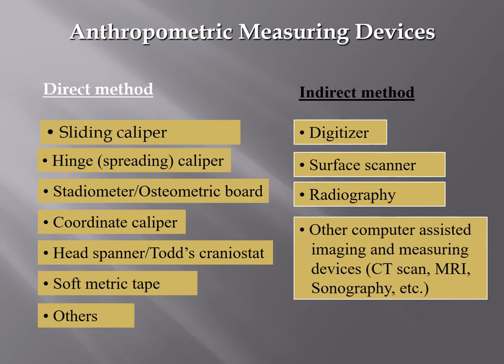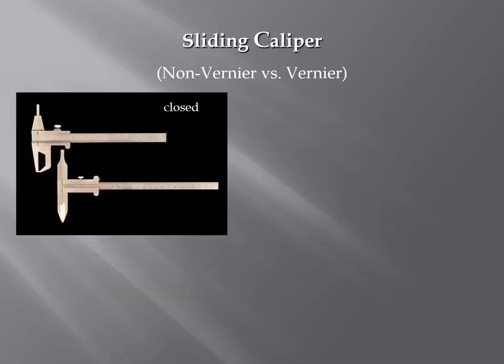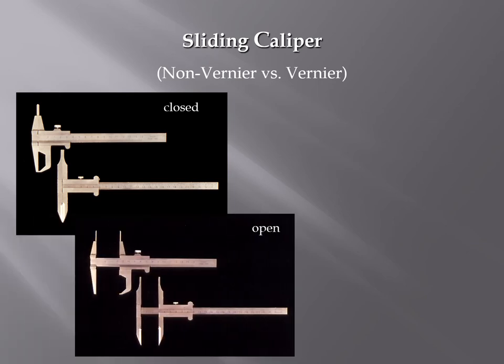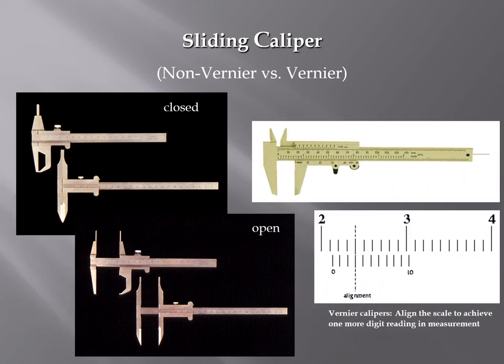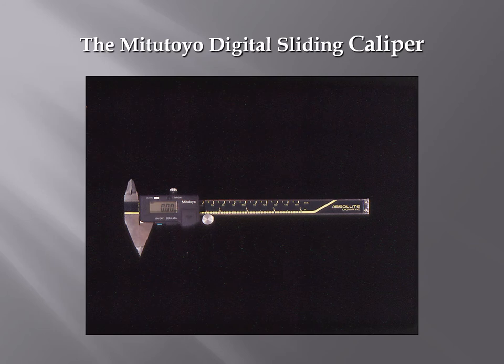Anthropometry also aims to explore trends in evolution, interpret fossil records, and apply findings in clinical diagnosis, treatment planning, forensics, and other commercial applications. There are two methods of measurement: direct and indirect. Direct methods use hand tools such as sliding calipers, metric tape, coordinate calipers, or a Todd's craniostat. Indirect methods include digitizers, surface scanners, radiography, CTs, MRIs, and X-rays.